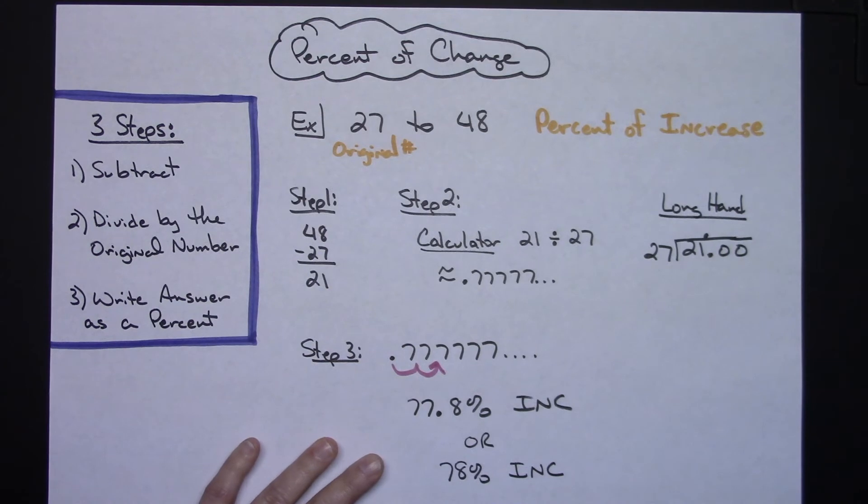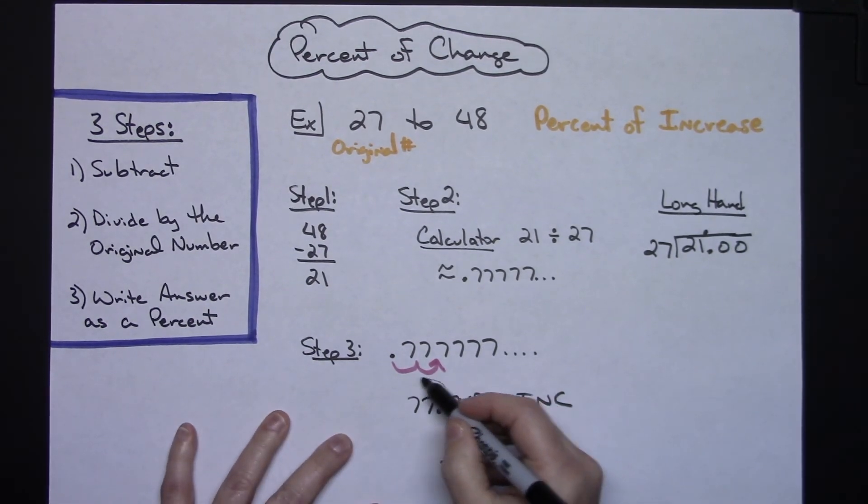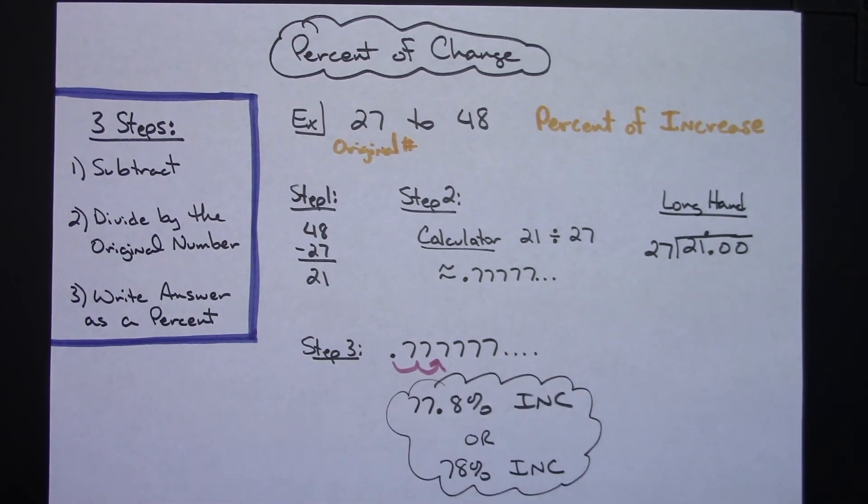So it just depends on how you are rounding there. They might even say round to the nearest hundredths, round to whatever. So your answer will vary there based on what you are rounding to.